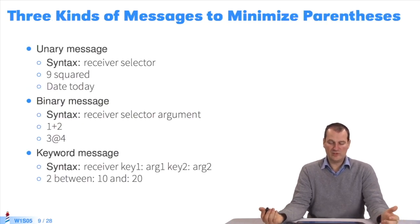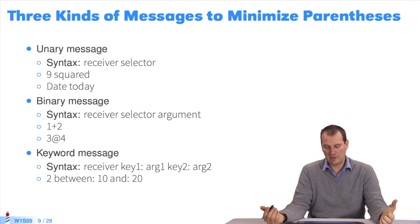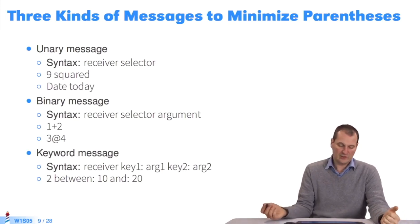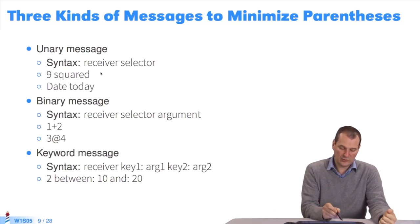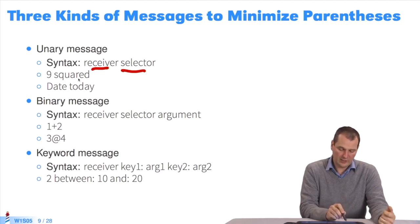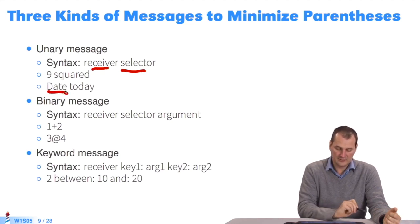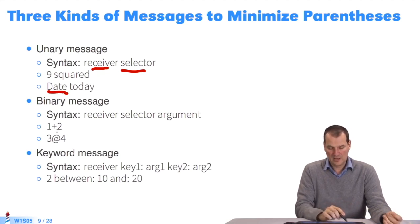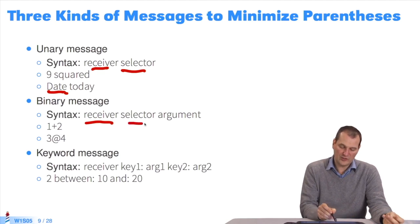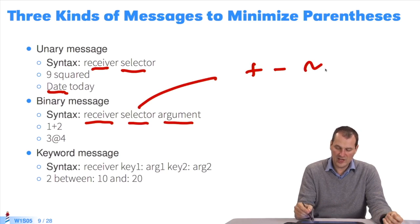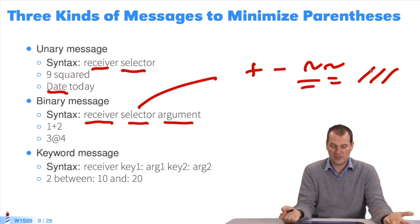There are three types of messages in Pharaoh. Why? In order to minimize the number of parentheses used — it's fairly simple. A unary message is always a receiver and a selector. For example, I've said that I want 9 squared, or I want today's date — I send the message today to the class date. There's no argument. Then there's the binary message, which also takes the form of a receiver, selector, and argument. But the selector will be plus, minus, tilde, equals, slash — that sort of thing. All those mathematical signs are for binary messages.